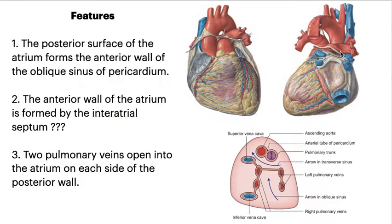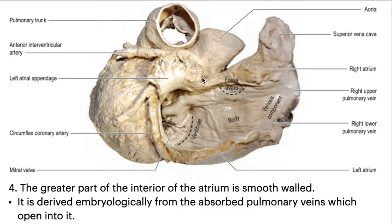The posterior surface of the atrium forms the anterior wall of the oblique sinus of the pericardium. The anterior wall of the atrium is formed by the interatrial septum. The two pulmonary veins open into the atrium on each side of the posterior wall. The greater part of the interior of the atrium is smooth-walled, derived embryologically from the absorbed pulmonary veins which open into it.